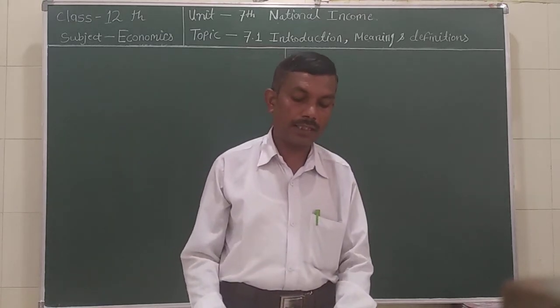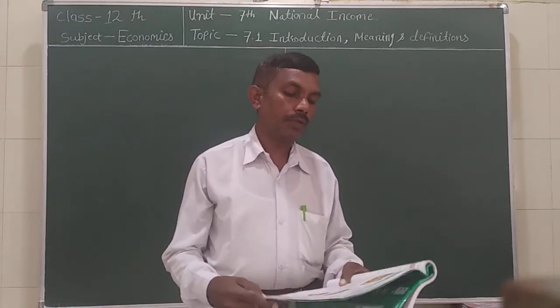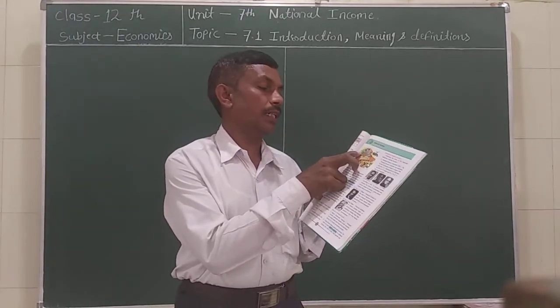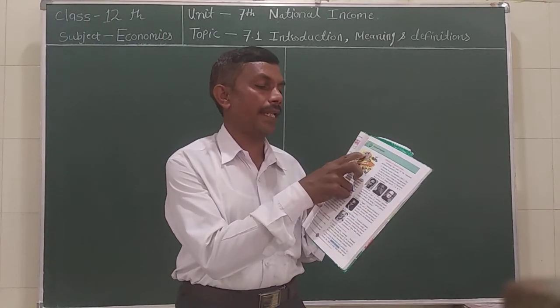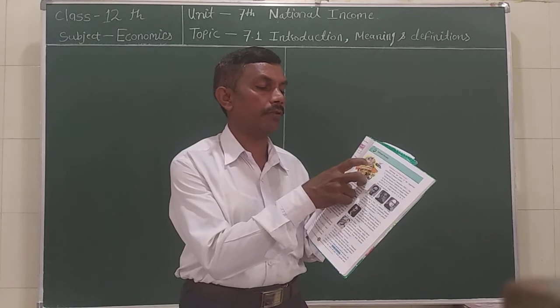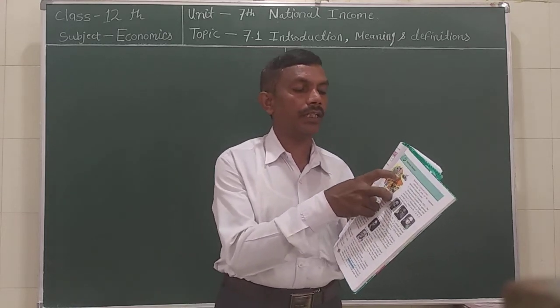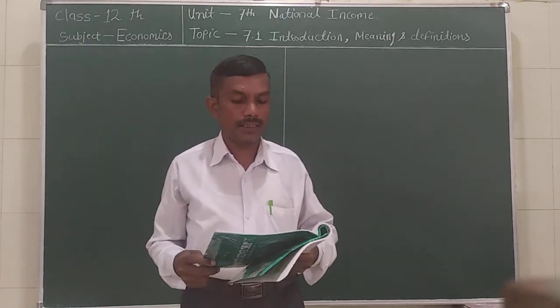The introduced figure 7.1: agriculture field, national industrialization, finance, banking, service, other factors, and services of the national income.